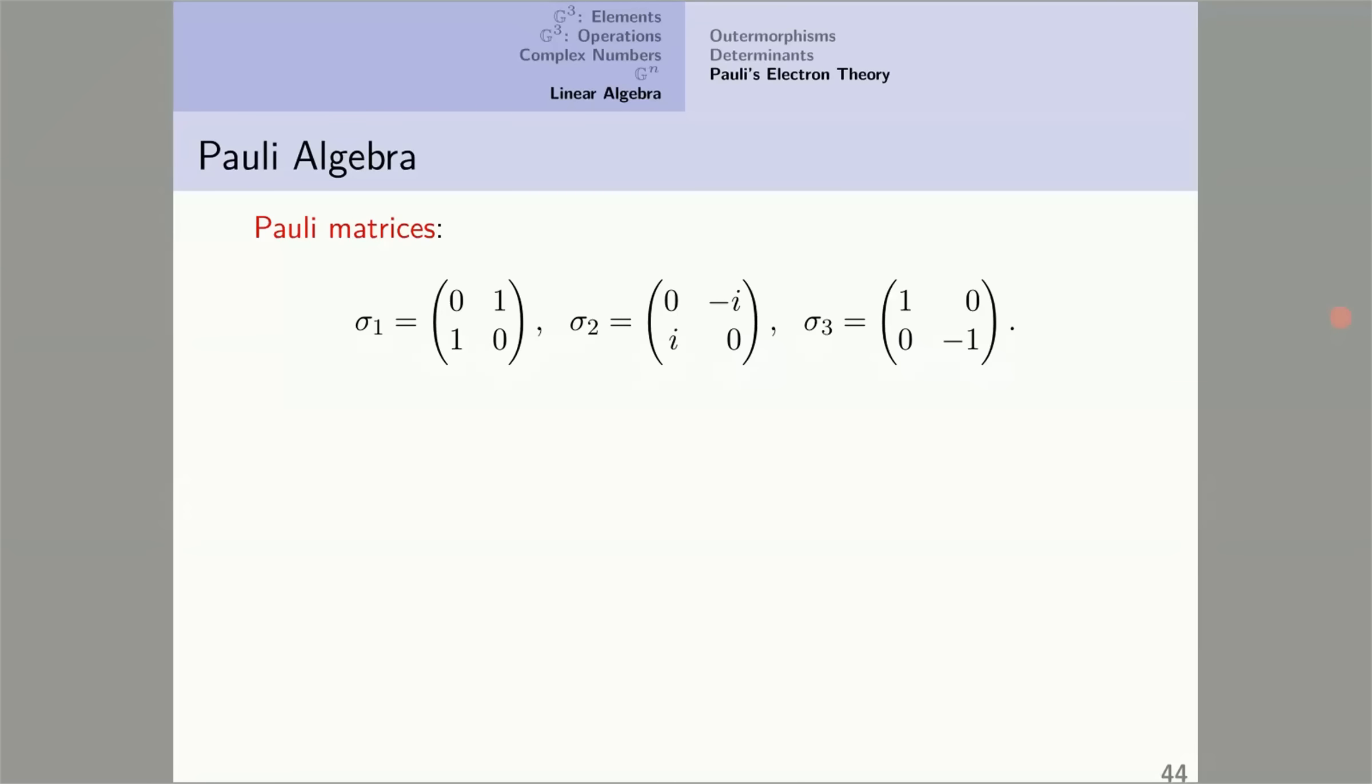The Pauli algebra. I'll start by defining it. It's based on three matrices called the Pauli matrices, sigma_1, sigma_2, and sigma_3. Notice that sigma_2 contains the complex number i. The Pauli algebra is defined to be the real algebra generated by the sigmas and the identity. That means that a general element of the Pauli algebra is a linear combination of sigma_1, sigma_2, sigma_3, and the 2 by 2 identity matrix I, the linear combination having real coefficients.